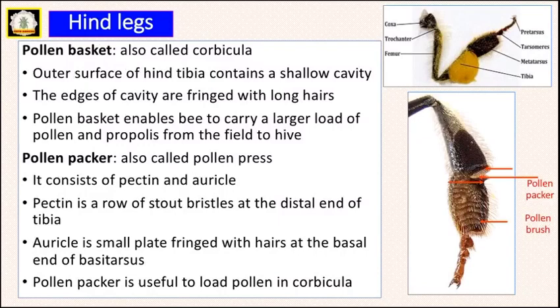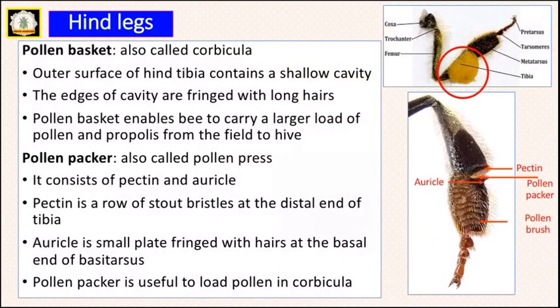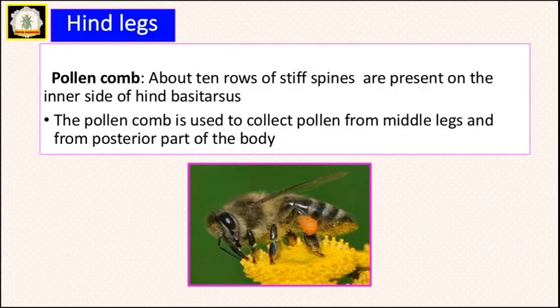The second structure on the hind legs is the pollen packer, also called the pollen press. It consists of a pecten and an auricle. The pecten consists of rough, stout bristles at the distal end of the tibia, and the auricle is a small plate fringed with hairs at the basal portion of the basitarsus. The pollen packer is used for loading the pollen into the corbicula.